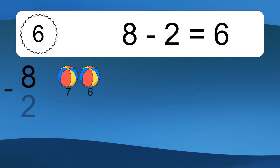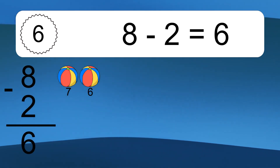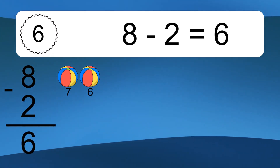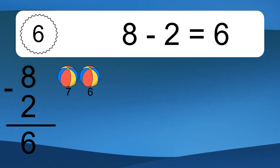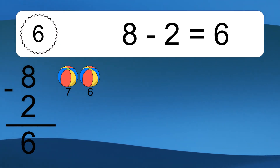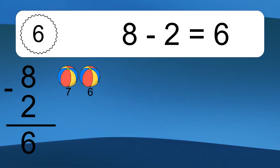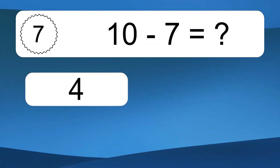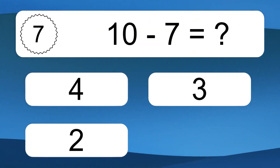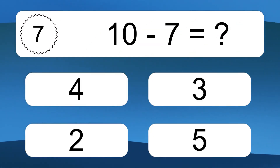8 minus 2 equals what? 8 minus 2 equals 6. Let's count it: 7, 6.